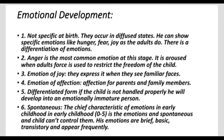From 2 to 5 years, the child is highly emotional and the emotions begin to show themselves in differentiated form. If the child is not handled properly, he will develop into an emotionally immature person. The chief characteristic of emotions in early childhood (2 to 5 years) is that emotions are spontaneous and the child cannot control them. There is a decline in overt expression of emotions as he reaches later childhood. The child's emotions are intense, brief, transitory, and appear frequently.